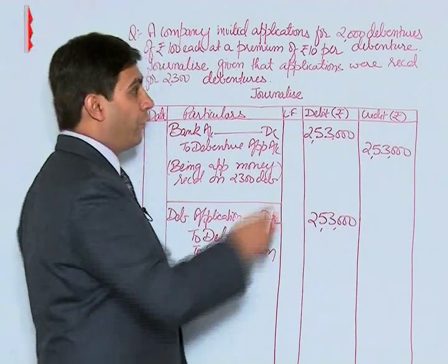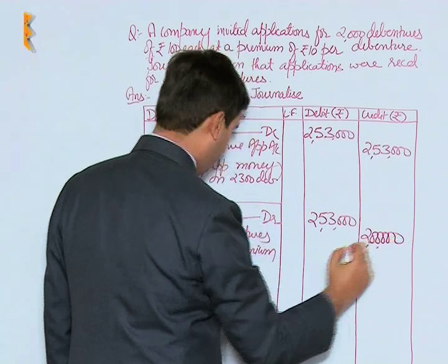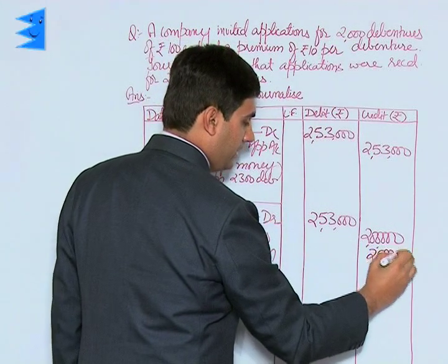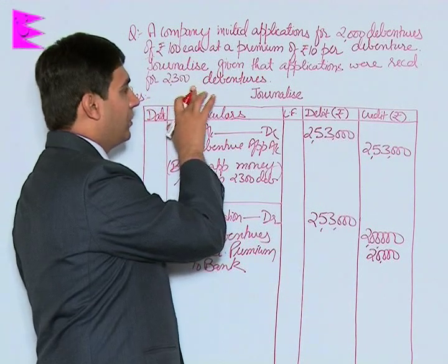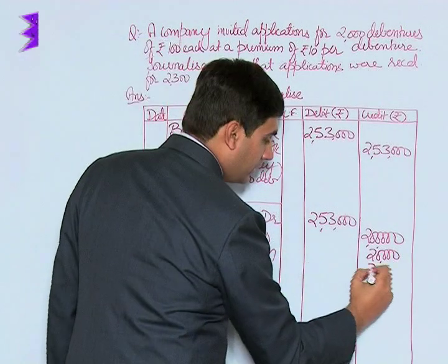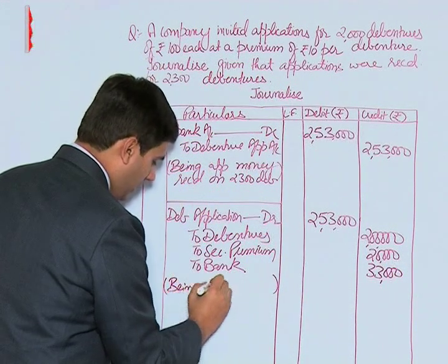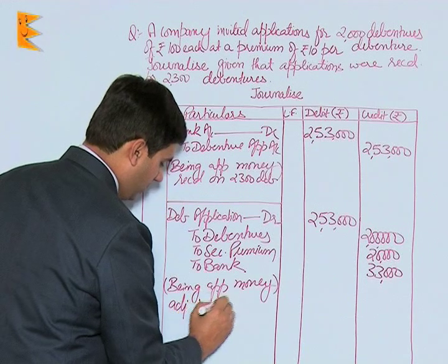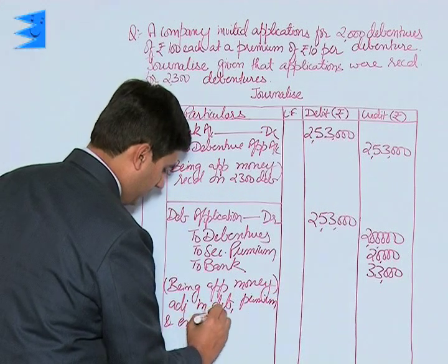Debentures account will have the face value of 2000 debentures: 2000 into 100 = rupees 2,00,000. Securities premium will have a premium of rupees 10 per debenture into 2000 debentures = rupees 20,000. Bank will refund excess applications of 300 debentures: 300 into 110 = rupees 33,000. Narration: being application money adjusted in debentures and premium, and excess refunded.